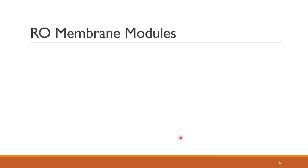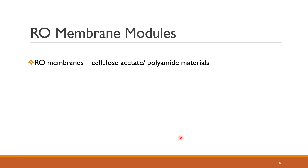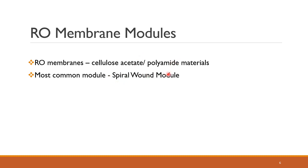Coming to RO membrane modules — you cannot use a single membrane for the process, you have to use multiple membranes arranged in modules. The reverse osmosis membranes are of two types, made from two materials: cellulose acetate and polyamide. These membranes are arranged in a spiral wound module, which is the most common arrangement, whereas the second and fairly uncommon type is called the hollow fiber or tubular membrane setup.